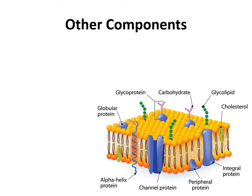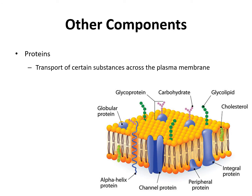In addition to the phospholipid bilayer, there are many other components embedded in the membrane. One large group of molecules are proteins. Proteins have many different functions in the cell, but one of the most common functions in the membrane is to help with the transport of certain substances that are too large to cross through the phospholipid bilayer. One example is a channel protein, which acts as a tunnel to allow large molecules to get into the cell.